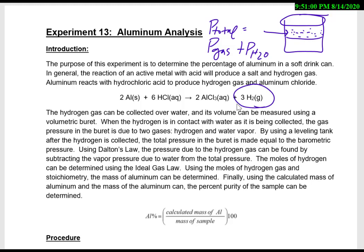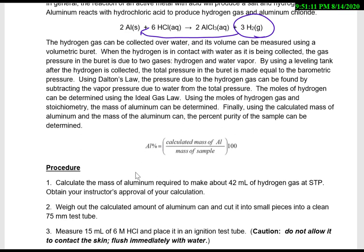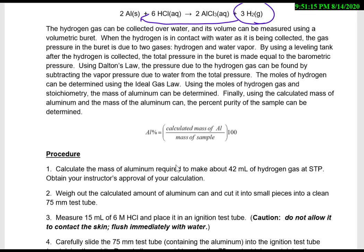We're going to collect the hydrogen gas, measure it, and then work our way backwards to see how much aluminum was actually present in the soft drink can. And then when you're asked to find the percent of aluminum, here is our equation that we'll use to find percent aluminum.